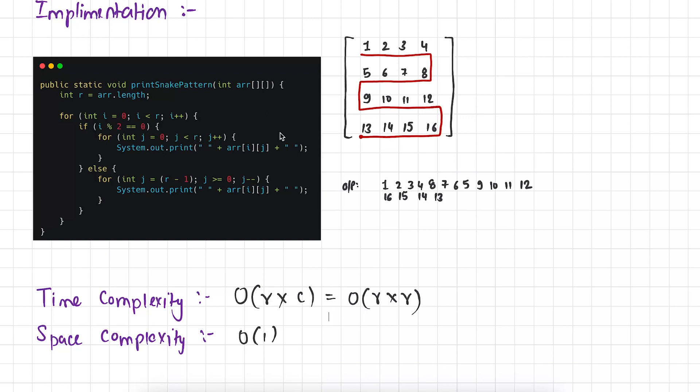But here in this case we are assuming that this is a square array and rows is exactly equal to columns. So we can say that it's big O of r into r.